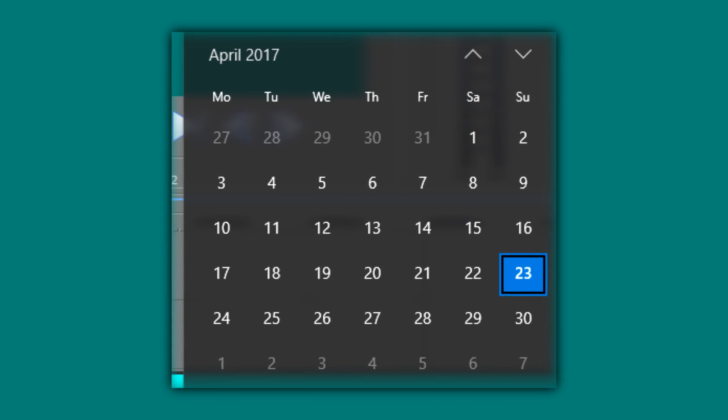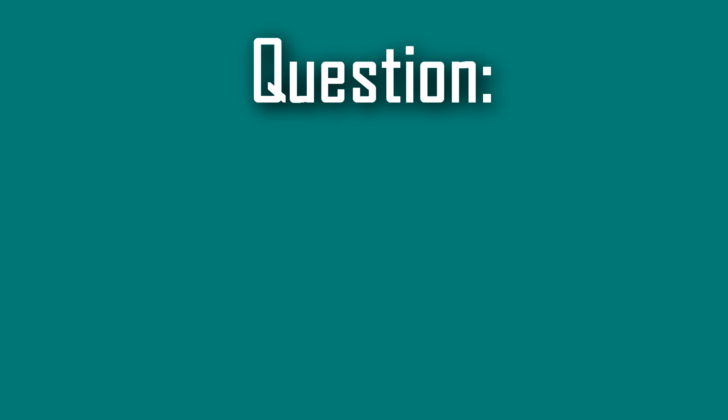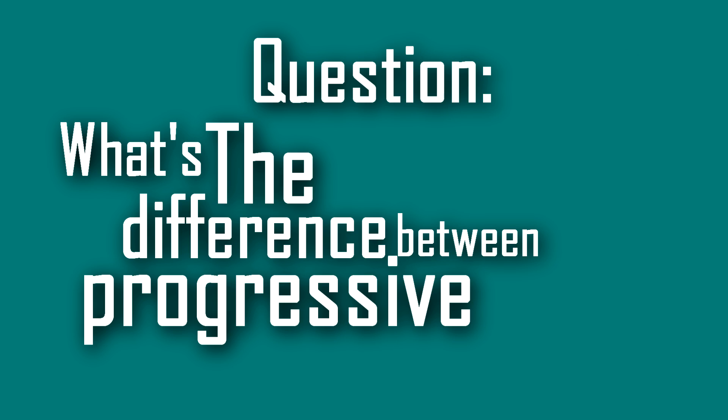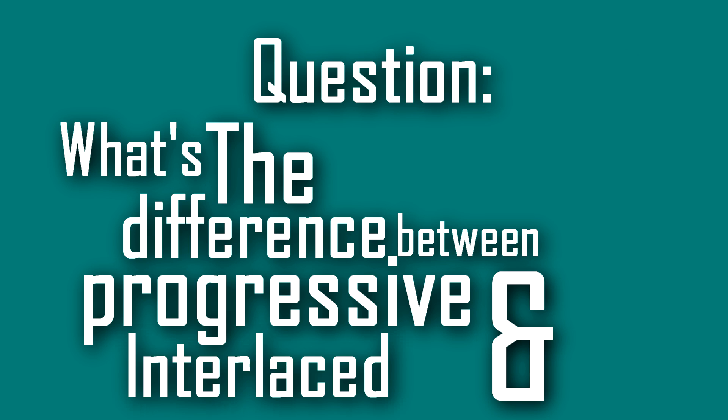A friend of mine requested me to make a video which I stated would be done within 10 days, and lo and behold a month later, here I am. I'm only a little bit over the due date, but here I'm going to be answering the question: what's the difference between progressive video in comparison to interlaced?